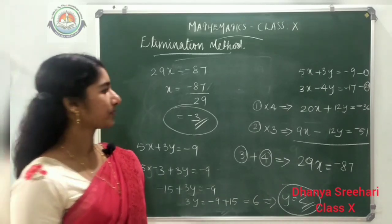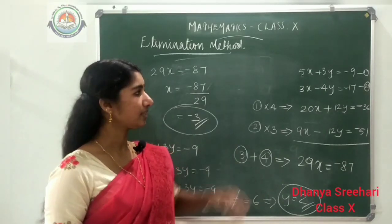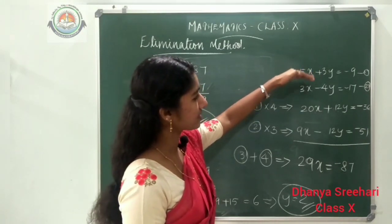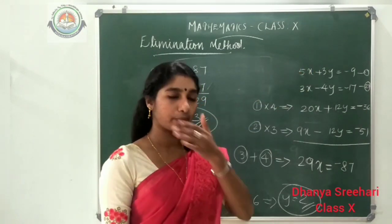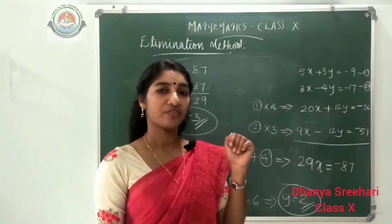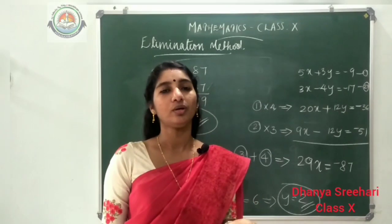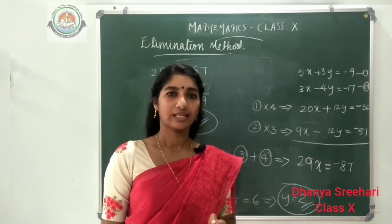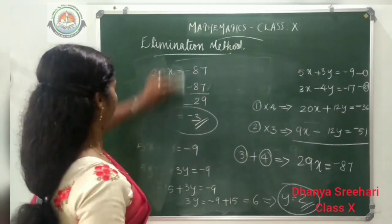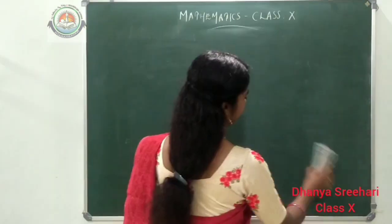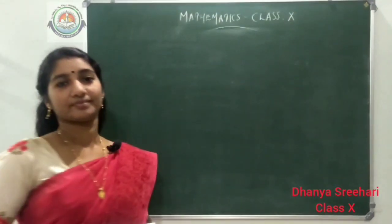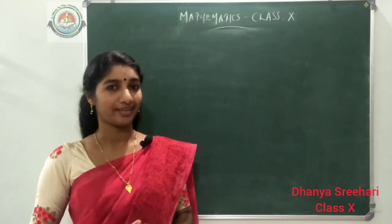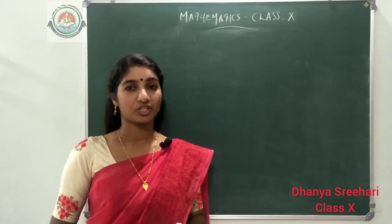Like this, when the coefficients of the given equations are different, we use suitable multiplication to make the coefficients equal, then do either addition or subtraction to eliminate one variable. I think you now have the idea of how to apply the elimination method.